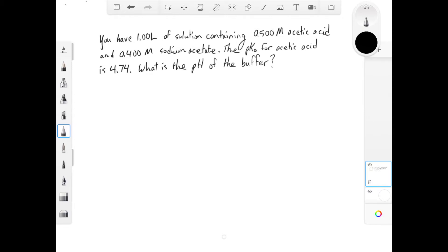So we have a 1-liter solution containing 0.5 molar acetic acid and 0.4 molar sodium acetate. Acetic acid and acetate ion are conjugate acids and bases. They're both weak. That means we have a buffer system.